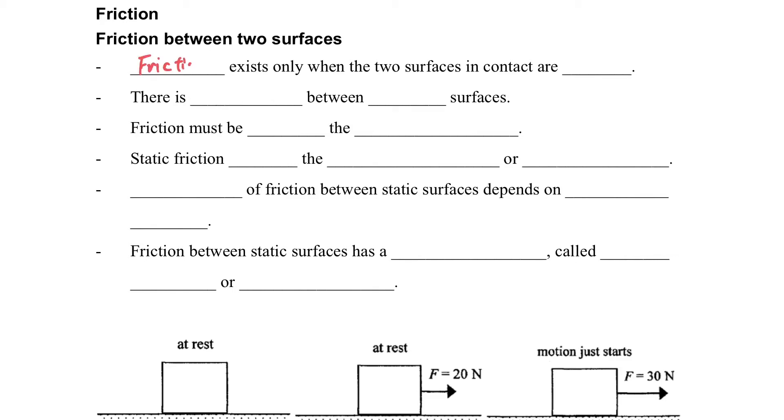Friction. The friction between two surfaces. Friction exists only when two surfaces are in contact and rough. There is no friction between smooth surfaces.